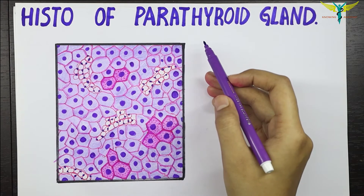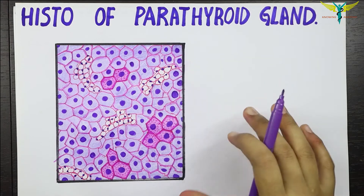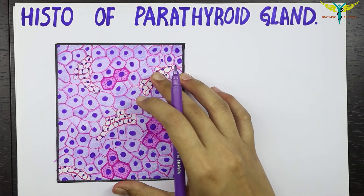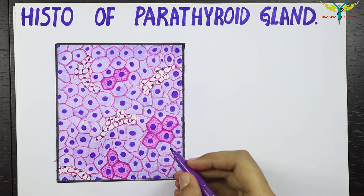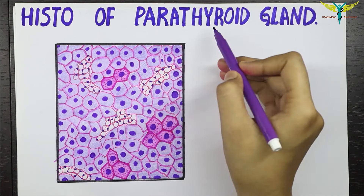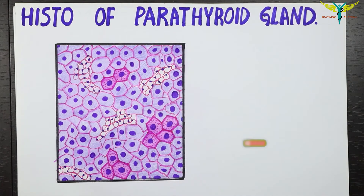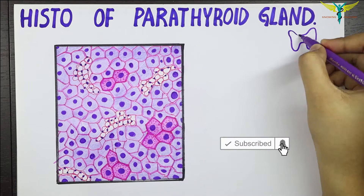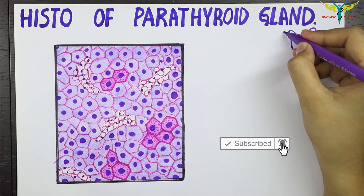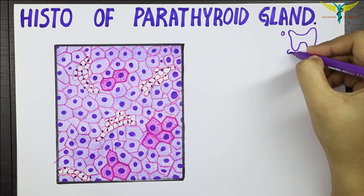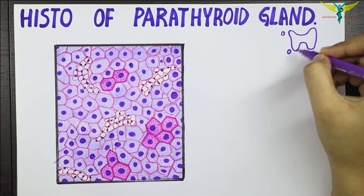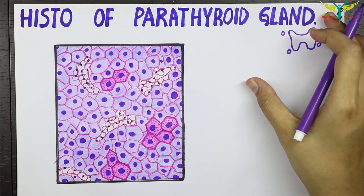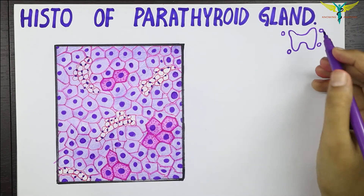Histology of the parathyroid glands. The parathyroid glands lie in close relationship to the thyroid gland, which is why they are called parathyroid glands. Normally there are two parathyroid glands — one at the superior and one at the inferior of either side of the thyroid gland.